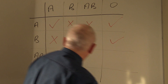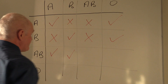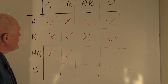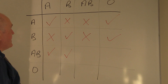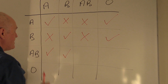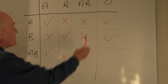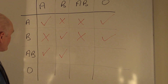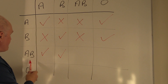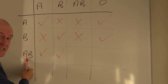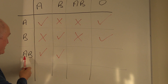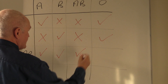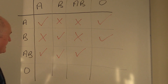B to AB is a permissible transfusion. AB to AB: here you're giving A and B antigens, but there are no A or B antibodies in the recipient's plasma, so again that is going to be acceptable.